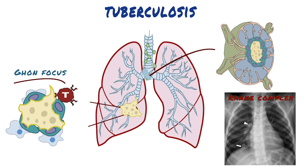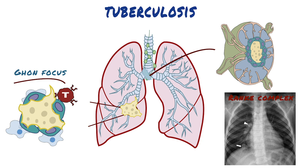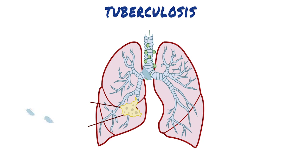In some cases, the immune system may have destroyed the mycobacteria, although a scar is left over. In other cases, even though they were walled off, they remain viable and therefore still alive, but dormant. When the host immunity is weakened, secondary tuberculosis occurs.